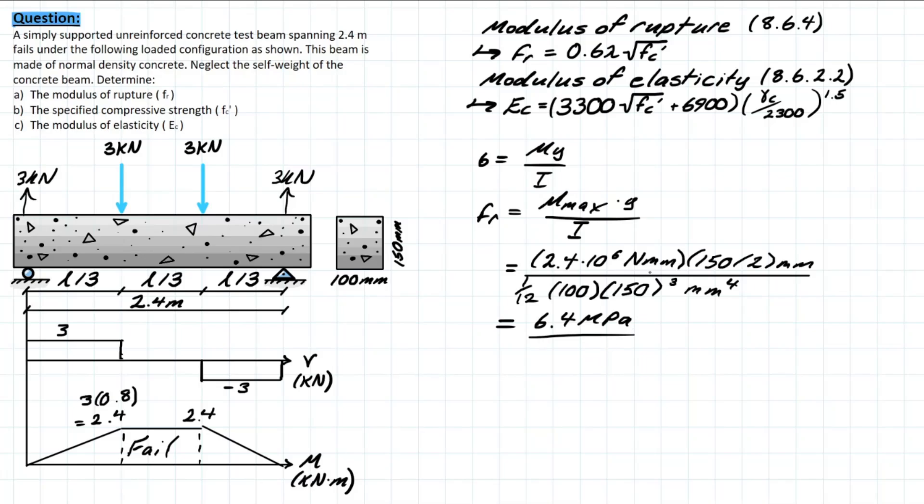We can now actually rearrange this rupture formula to determine what the compressive specified strength is for the concrete as well. Rearranging that formula would look something like this where we have fc prime rearranged for, bring 0.6 and lambda over to the rupture side and squaring everything. So we have fr over 0.6 times lambda, and that's all squared.